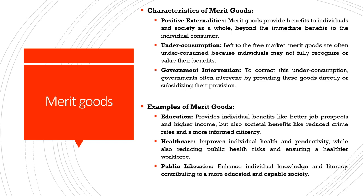The second characteristic of merit goods is under-consumption: left to the free market, merit goods are often under-consumed because individuals may not fully recognize or value their benefits. The third characteristic is that government intervention is required to correct for under-consumption. Governments intervene by providing these goods directly or subsidizing them. Education provides individual benefits like better job prospects and higher income, but also societal benefits like reduced crime rates and a more informed citizenry. Similarly, healthcare improves individual health and productivity but also reduces public health risks.